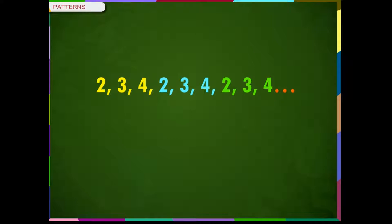Here, the numbers 2, 3 and 4 are getting repeated again and again. So, this type of pattern is called a repeating pattern. In a repeating pattern, we need to identify the portion of the pattern that is getting repeated. Like in this example, the numbers 2, 3 and 4 are getting repeated.